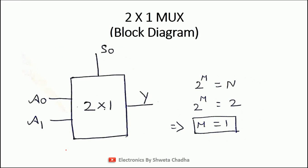The first example is the 2 cross 1 multiplexer. In the block diagram, a 2 cross 1 multiplexer has 2 input signals termed as A0 and A1, and 1 output signal that is Y. Using the formula 2 raised to the power of M equals N, with N equal to 2, the value of M comes out to be equal to 1. So only one select line, which is S0, will be used for the implementation of the 2 cross 1 multiplexer.